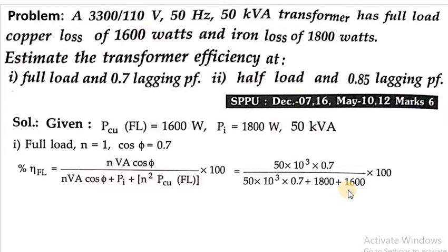We are getting the efficiency in percentage at full load condition is 91.146%. So the full load efficiency at 0.7 lagging power factor is 91.146%. Now we will see the second condition.